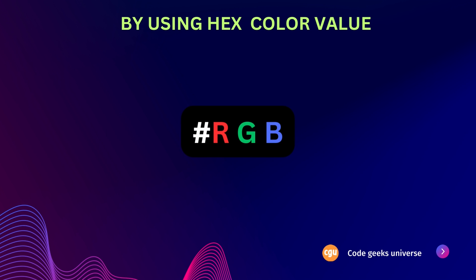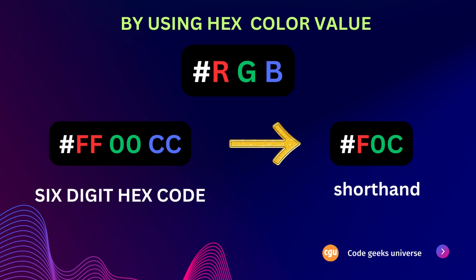In CSS source code, you may come across a three-digit hex code. This serves as a shorthand for certain six-digit hex codes commonly used in web design. The three-digit hex code follows the format #rgb. When all three components have identical paired digits, a three-digit hex code can be used. For example, a hex code of #ff00cc can be condensed to #f0c, while representing the same color.